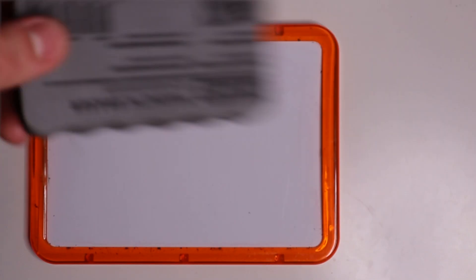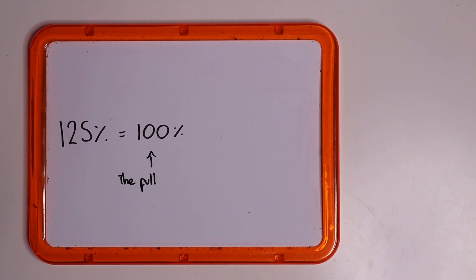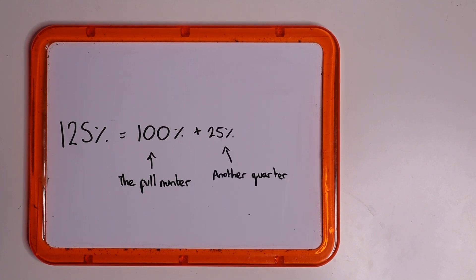Just like with fractions, you can also have percentages more than 100. For example, 125 percent, which is the full number — the 100 percent — and another quarter of the number, the 25 percent.